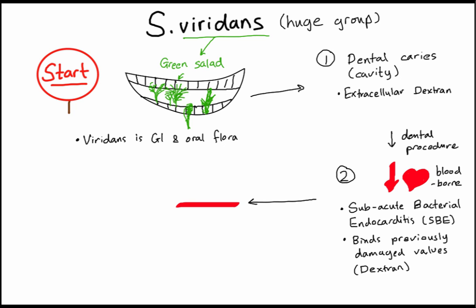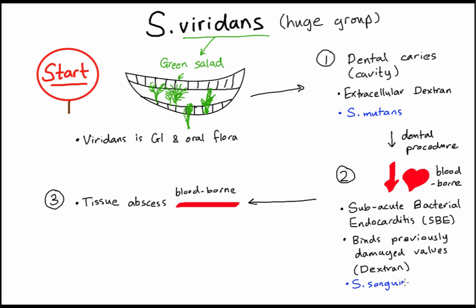Since it's already in the heart, it can travel anywhere in the body through the blood and cause bloodborne diseases. The third thing it causes is abscesses — it can cause brain abscesses or tissue abscesses anywhere. For Step 1, the specific species to know: the one causing dental caries is Strep mutans; the one causing heart infection is Strep sanguineus (sanguineus means blood in Latin); and tissue abscesses are caused by Strep intermedius — intermediate, anywhere in the body.